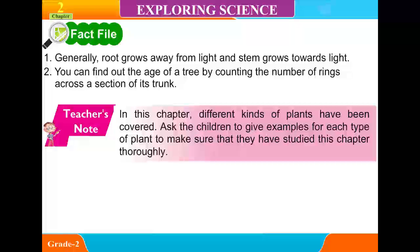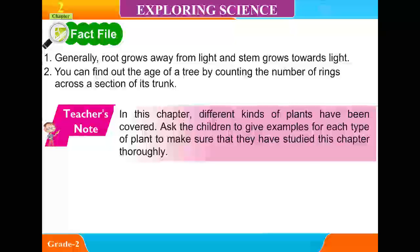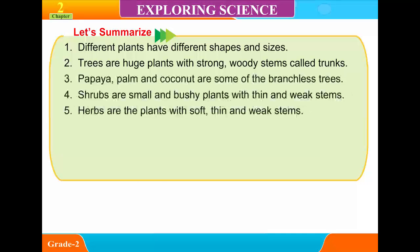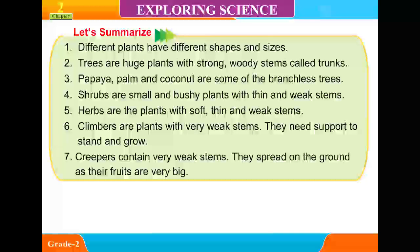Teacher's Note: In this chapter, different kinds of plants have been covered. Ask the children to give examples for each type of plant to make sure that they have studied this chapter thoroughly. Let's Summarize: 1. Different plants have different shapes and sizes. 2. Trees are huge plants with strong woody stems called trunks. 3. Papaya, palm and coconut are some of the branchless trees. 4. Shrubs are small and bushy plants with thin and weak stems. 5. Herbs are plants with soft, thin and weak stems. 6. Climbers are plants with very weak stems that need support to stand and grow. 7. Creepers contain very weak stems and spread on the ground as their fruits are very big.